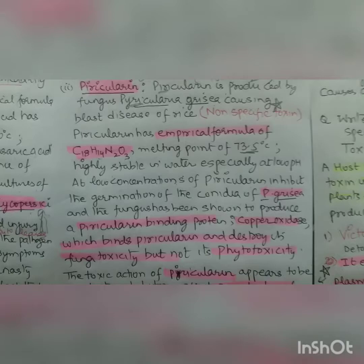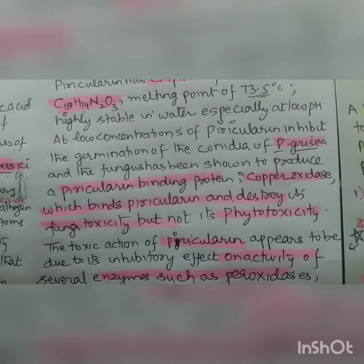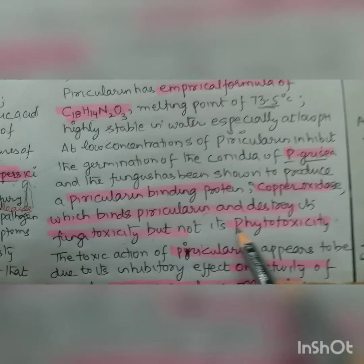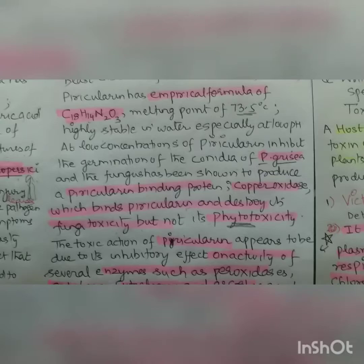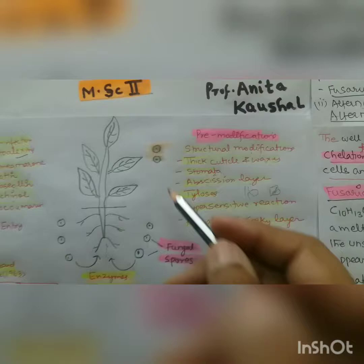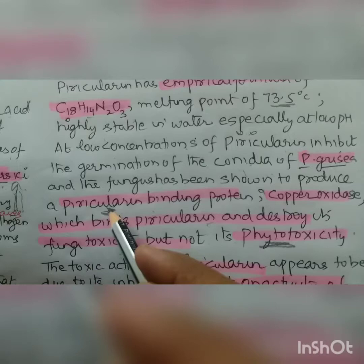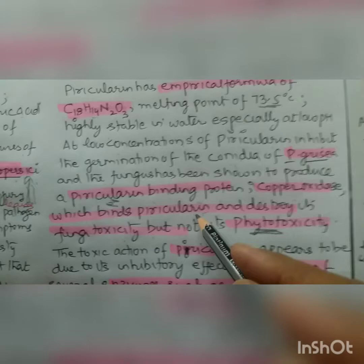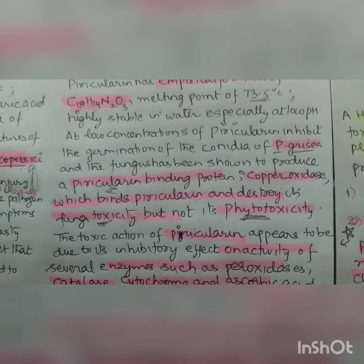The fungus has been shown to produce a pericularin-binding protein — copper oxidase — which binds to pericularin and destroys its fungitoxicity but not its phytotoxicity. This means the fungus is smart: it produces this binding protein so that the pericularin no longer harms it, but it continues to damage the host plant.